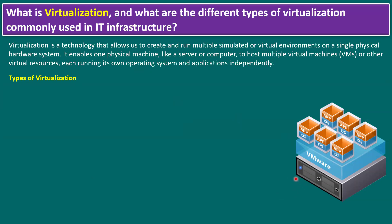In the diagram, we have a single hardware system. On top of it, we install VMware ESXi. Using the ESXi hypervisor, it allows us to create multiple virtual machines — a virtual machine being a software-generated machine. This enables one physical machine, like a server or computer, to host multiple virtual machines, each running its own operating system and applications independently.